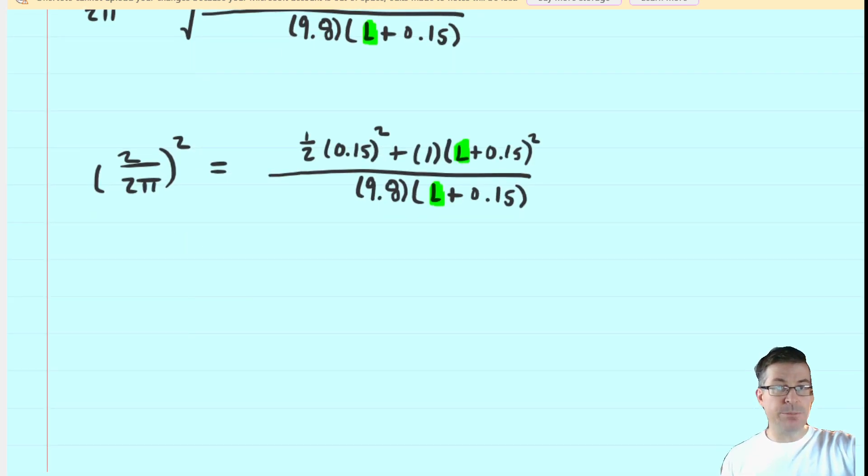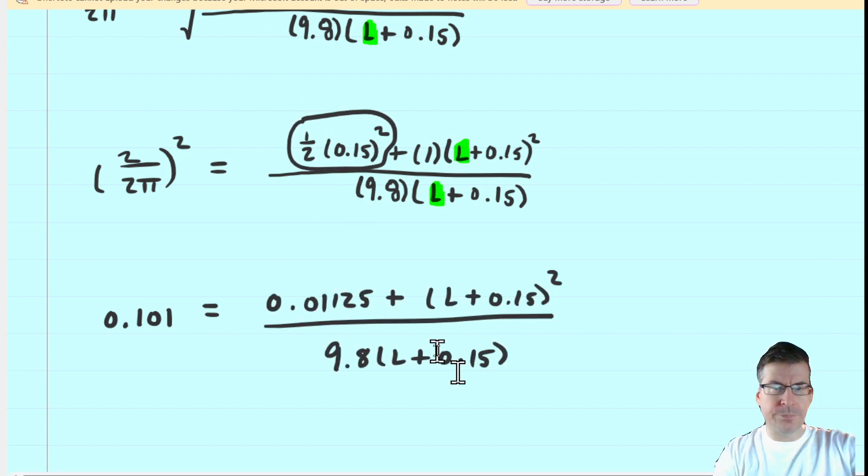To get rid of the square root on both sides, we will square both sides. The left hand side can be inputted into a calculator, and this term here can also be inputted into a calculator. Next, we can multiply both sides of the equation by this term here.